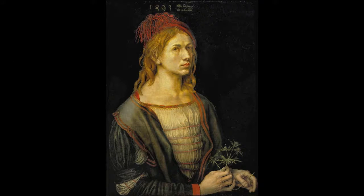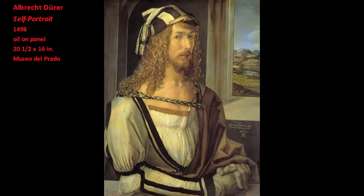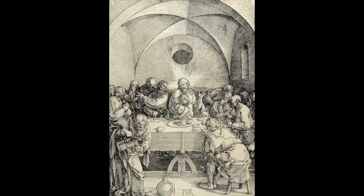Most famously, Dürer made two trips to Venice, where he absorbed artistic lessons of the Italian Renaissance. In his 1498 self-portrait, completed shortly after his return from his first trip to Italy, he depicts himself not as a manual laborer, but as a humanist gentleman. Dürer's Last Supper, completed within a few years of his return from his second trip to Venice, shows his understanding of Italian Renaissance art.